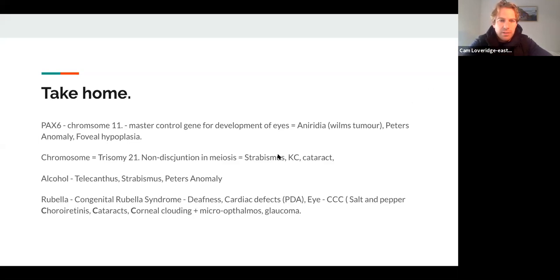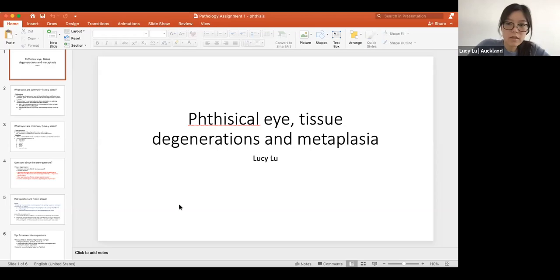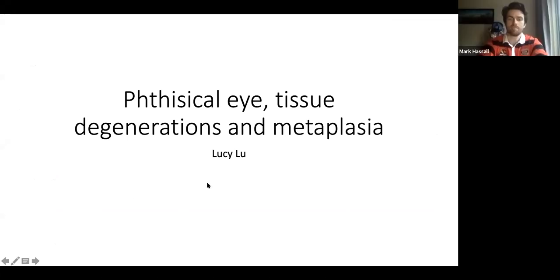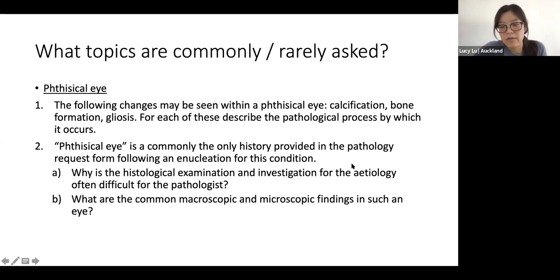That was really concise — great tips at the end, thank you Cam. Okay, who's next? I am — I'm talking about phthisis. I'll share screen. So I've looked at questions relating to phthisis, eye tissue degeneration, and metaplasia. The two questions that have come up in the past on phthisis were: describing the changes seen within the phthisis eye including calcification, bone formation, and gliosis; and explaining why histological examination and finding the original etiology can be difficult when examining a phthisis eye.